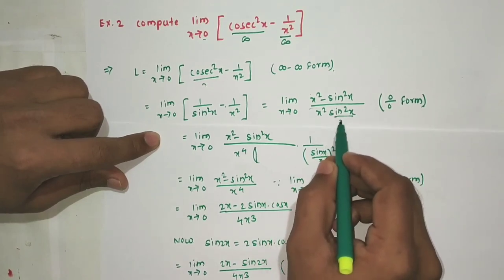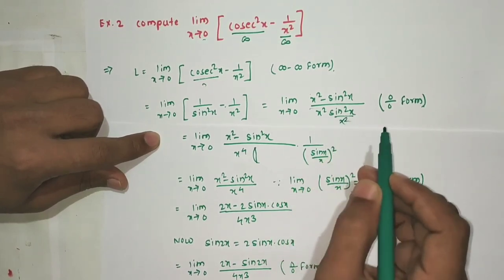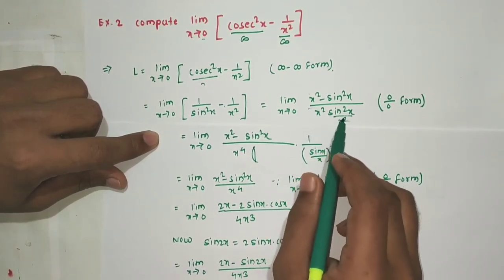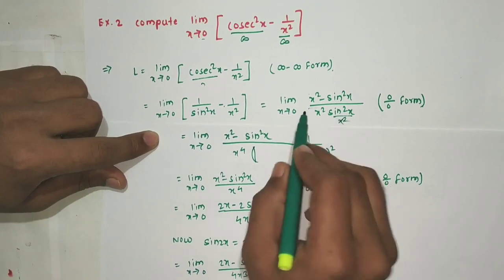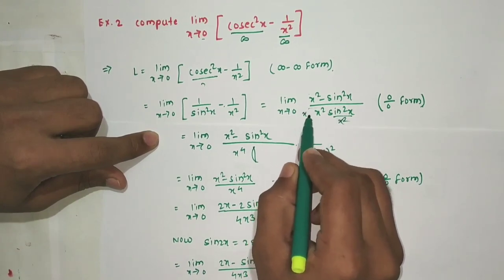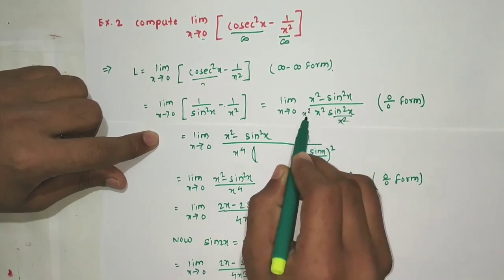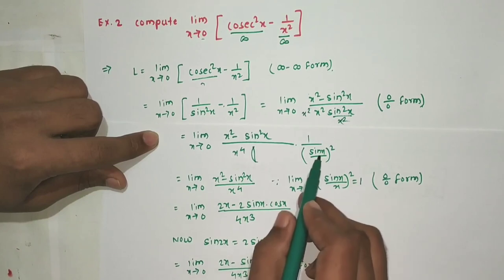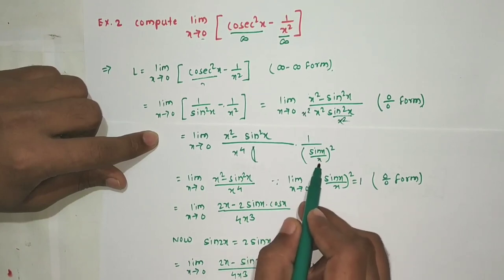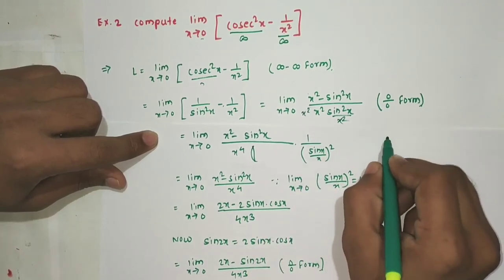We adjust the expression by multiplying and dividing by x² in order to use the standard limit lim(x→0) [sin x / x] = 1.